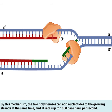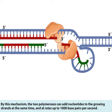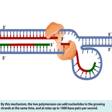By this mechanism, the two polymerases can add nucleotides to the growing strands at the same time at rates up to 1000 base pairs per second.